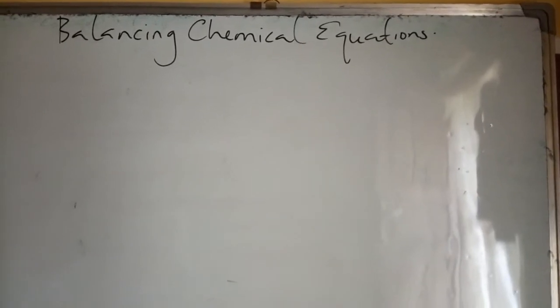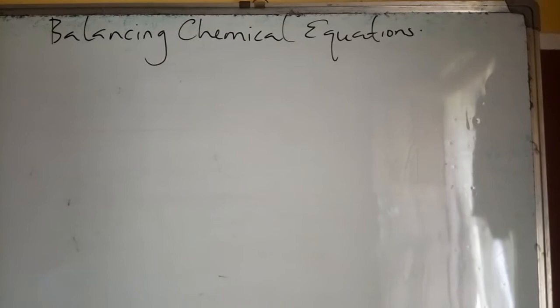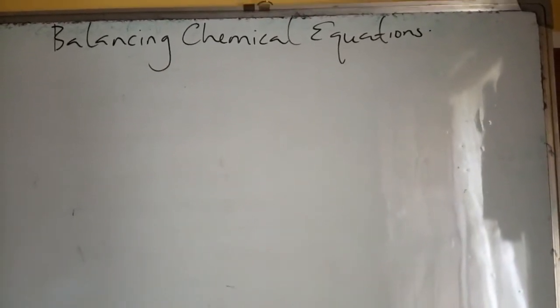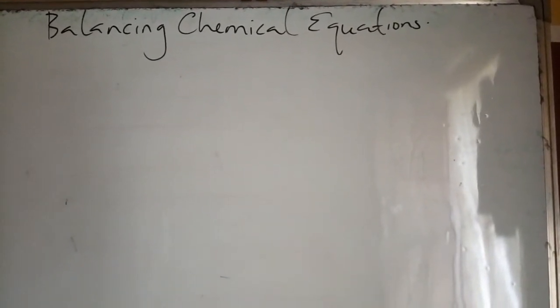Everything in this world needs to be balanced. In physics, in mathematics, everything needs to be balanced. What's important about balancing chemical equations is that if the equation is not balanced, it means that John Dalton's theory is wrong. Because John Dalton said that matter can neither be created nor destroyed.